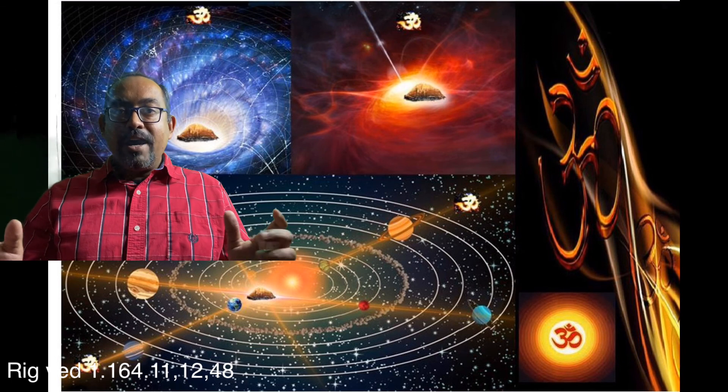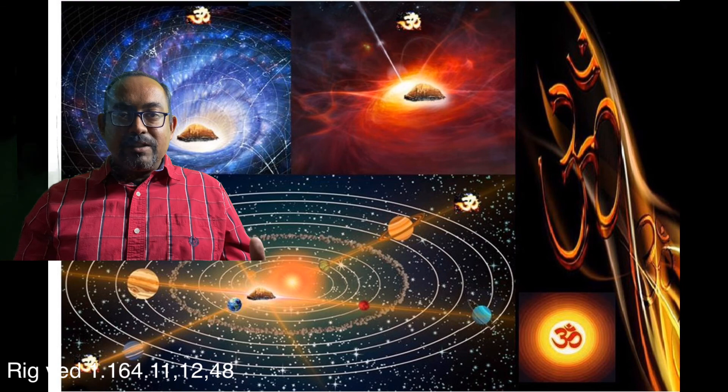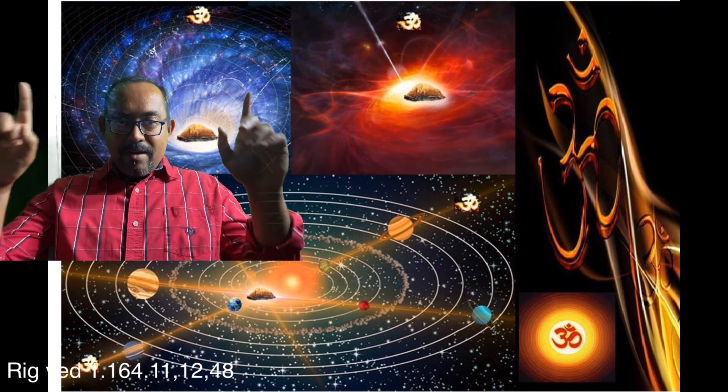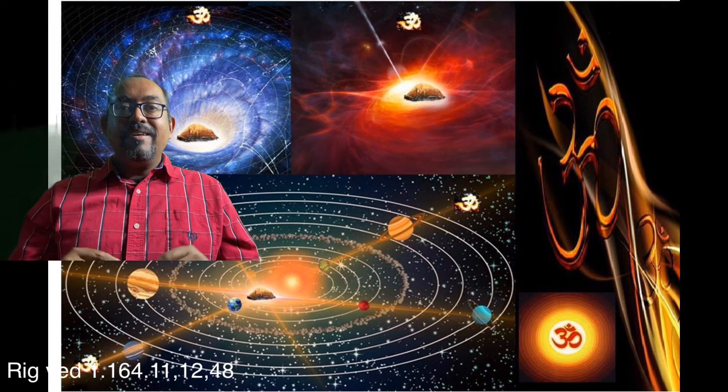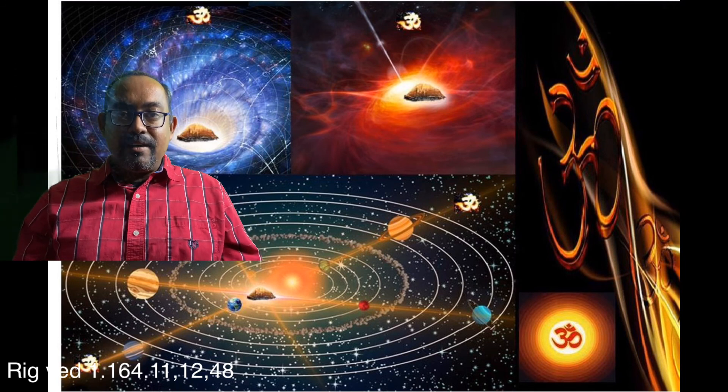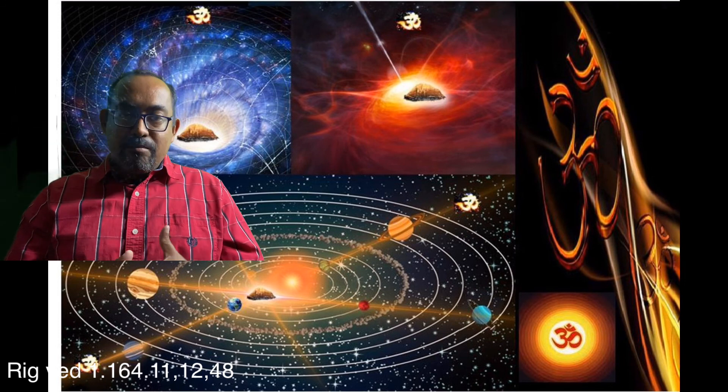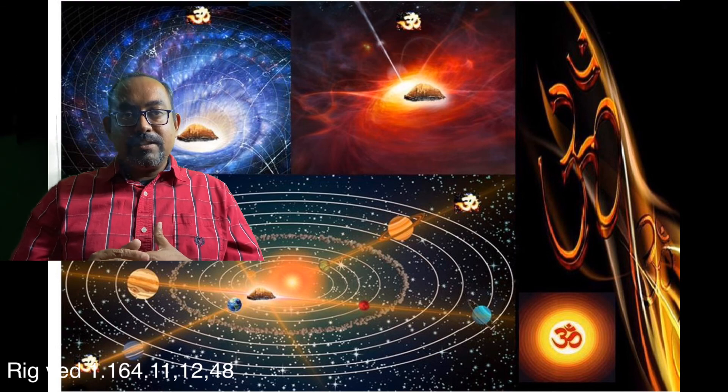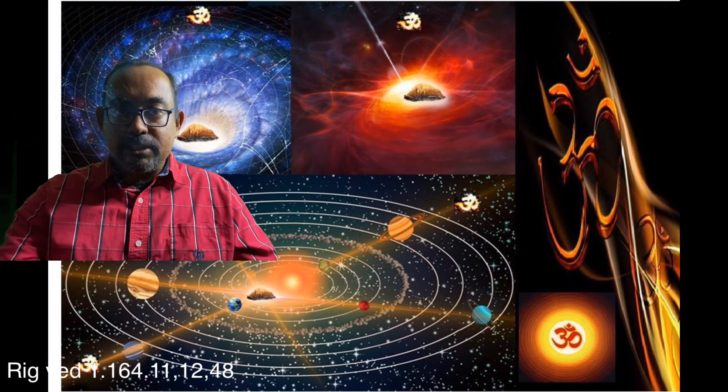You have learned why there is 360 degrees in a circle, why everything is based on 60, why you have 60 minutes in an hour, why you have 12 months in a year, why there are 360 days. In the next part I have to do some mathematical calculations and I'll show you how this 5 and a quarter came from Vedas. Thank you, namaste.